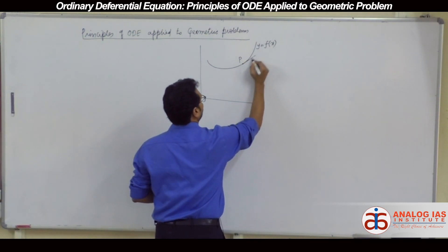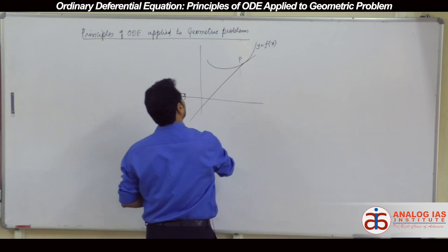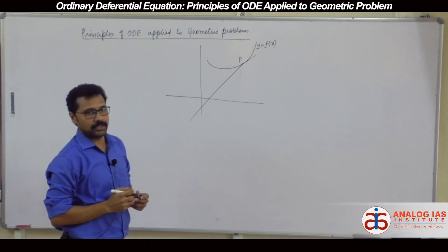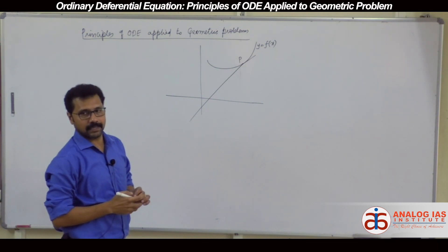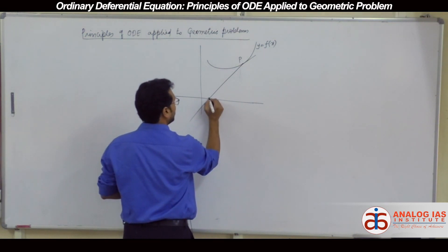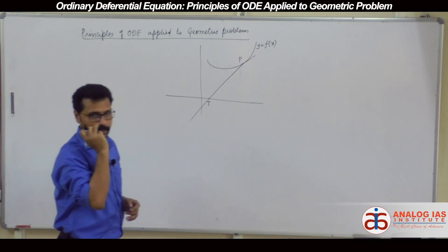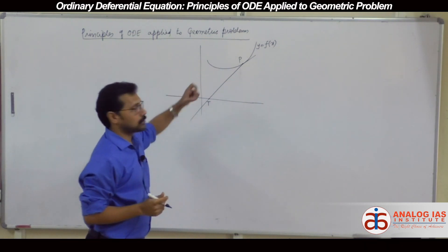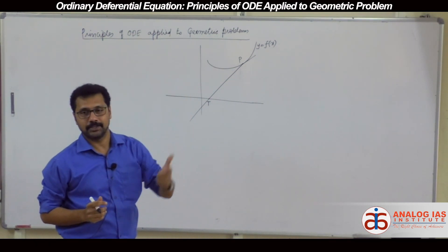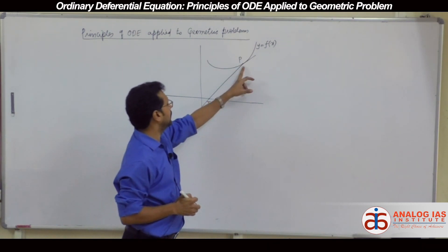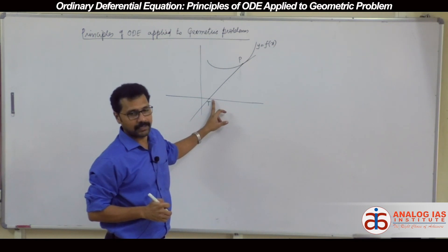At that point, suppose if I draw a tangent — this tangent intersects the x-axis at a point. Let that point be T. The length PT is also called the length of tangent.